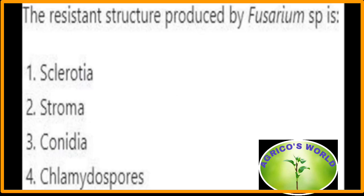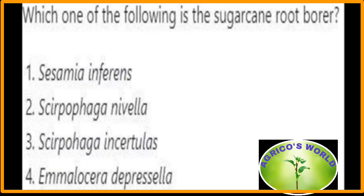The resistant structure produced by Fusarium species is chlamydospores. Chlamydospores are the resistant structures produced by Fusarium species.